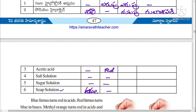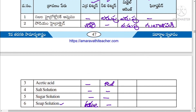Here what we concluded: the blue litmus paper will turn red in acidic solution, and the red litmus paper will turn blue in base solution.